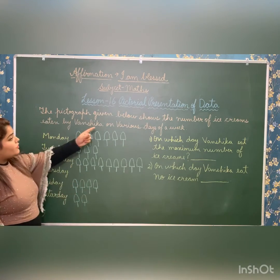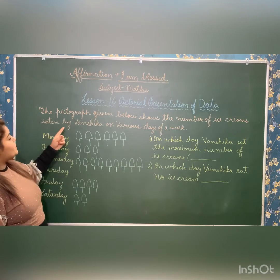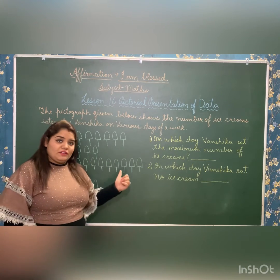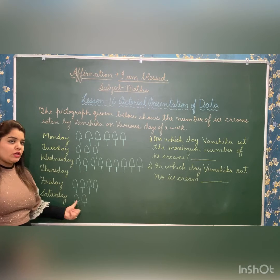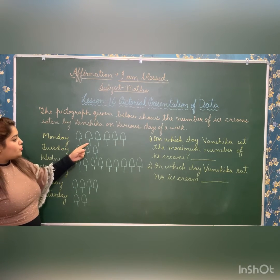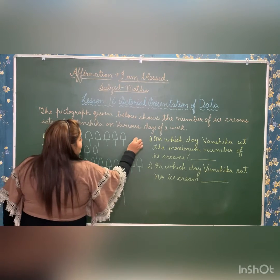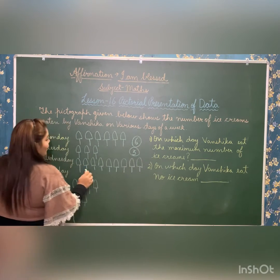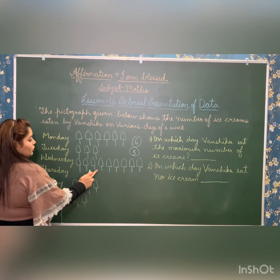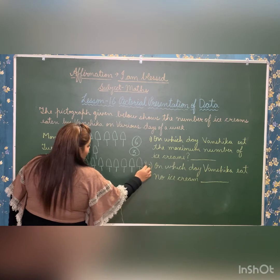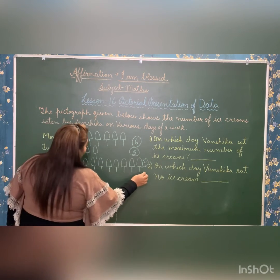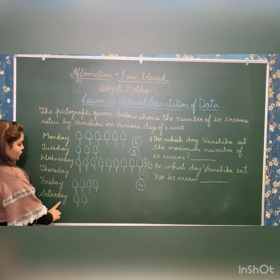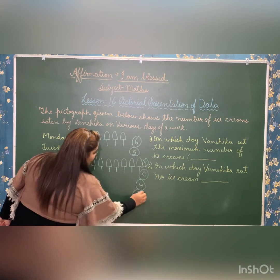Let's read a question. The pictograph shown below tells us how many ice creams one girl eats on various days of the week. On Monday she eats six ice creams, on Tuesday three, on Wednesday nine, on Thursday zero ice creams, and on Friday she eats four.